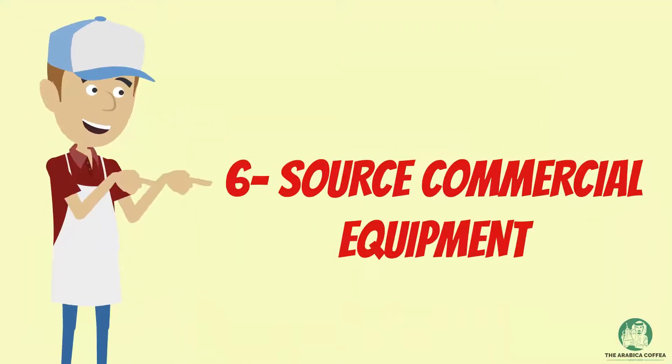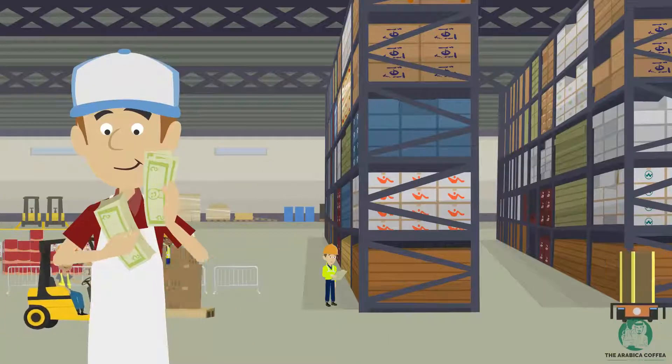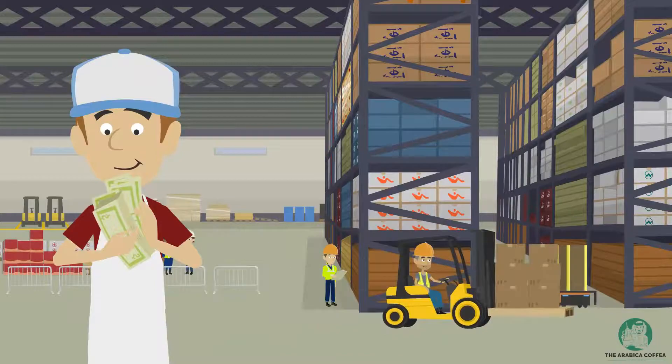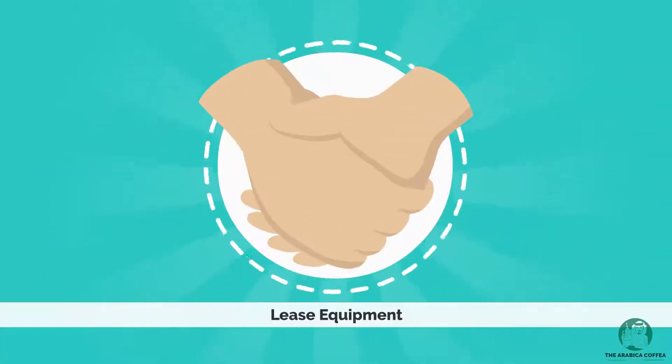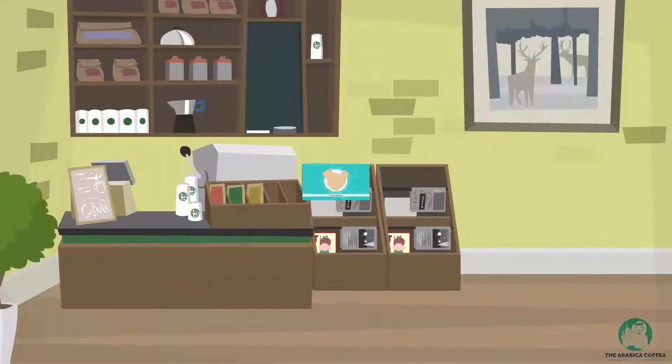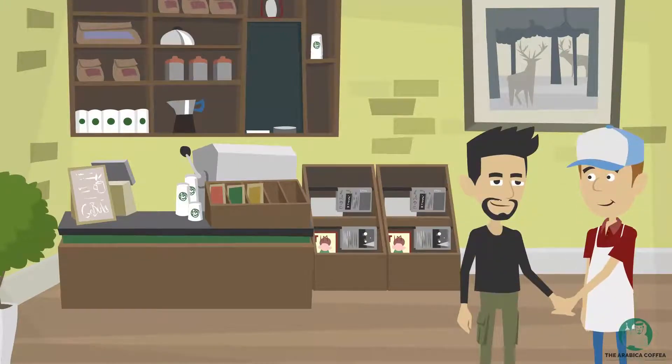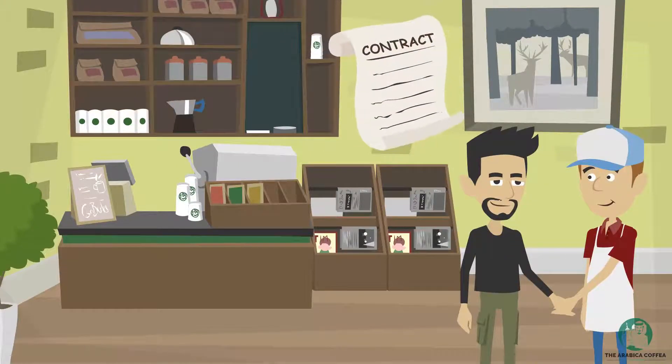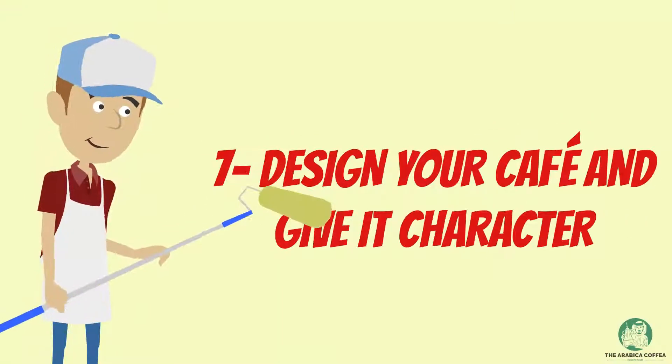Number six: Source commercial equipment. Buy equipment outright using your own finance or cash, lease equipment through commercial providers, or in the case of coffee equipment, many cafes are also able to get this on loan from their coffee roaster.